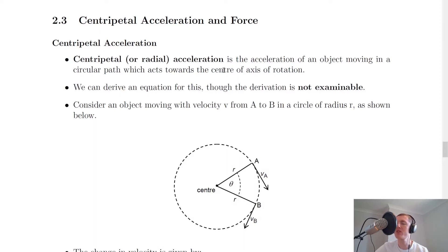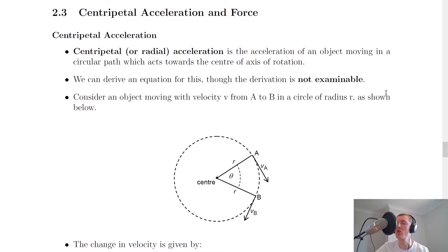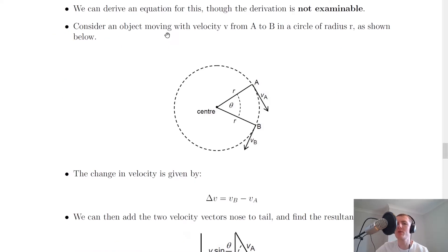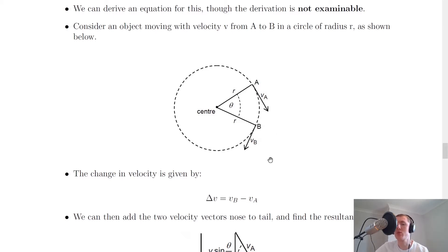We can derive an equation for centripetal or radial acceleration, though you should be aware that the derivation is not examinable. The only reason I'm going to show you is so that we've not just plucked this new equation out of thin air. We want to consider an object moving with some velocity V from a point A to a point B in a circle of radius R, as shown in this picture here. There's our point A, there's our point B, and there's the centre of the circular path.